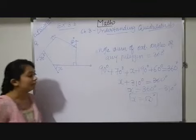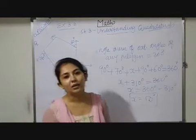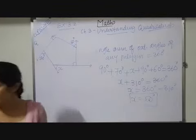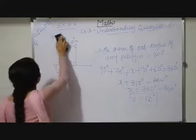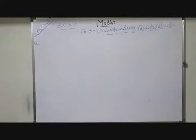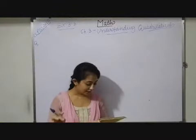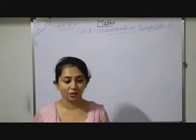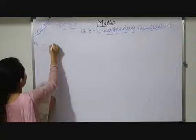Like that, you can obtain a missing exterior angle of any polygon. Here, one more question based on the same exercise I want to discuss: find the measure of each exterior angle of a regular polygon which has 9 sides.